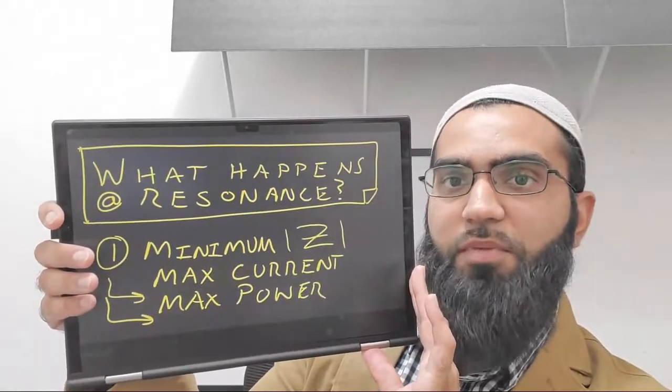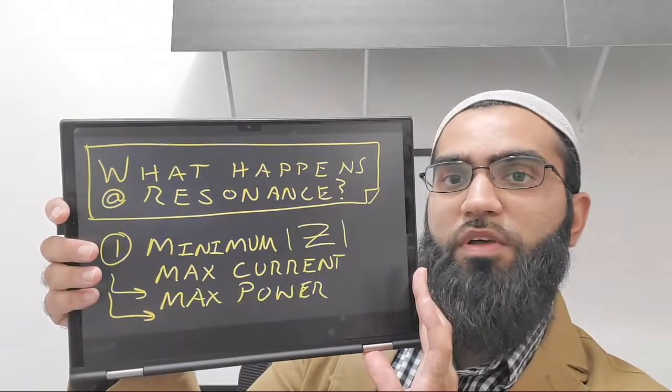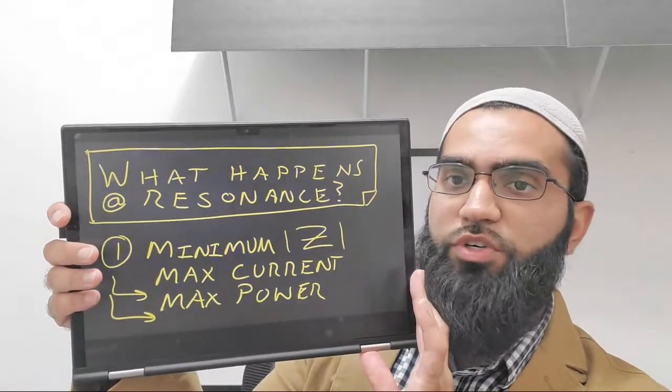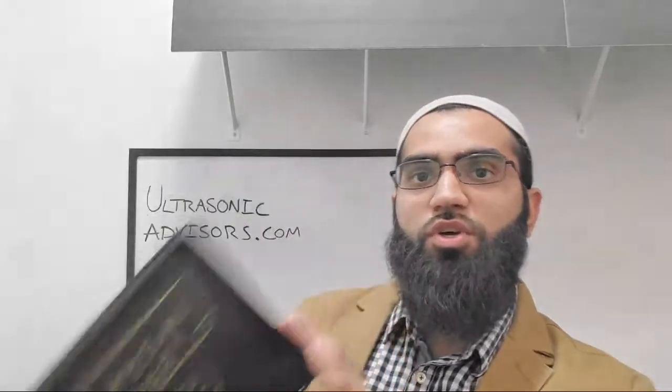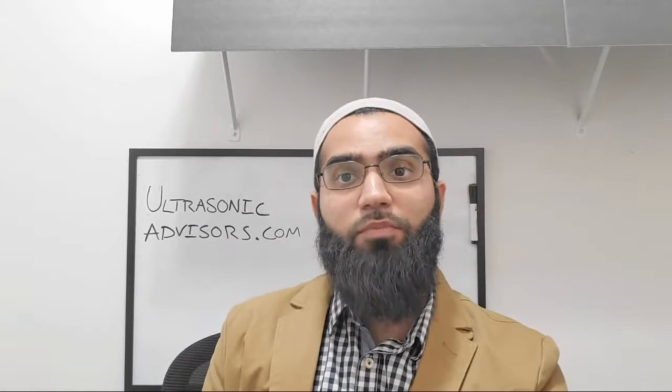At the resonance frequency we typically have the minimum impedance. That also means the voltage to current ratio is minimum, so you have the maximum current for an applied voltage.